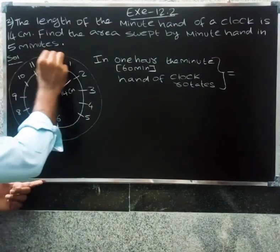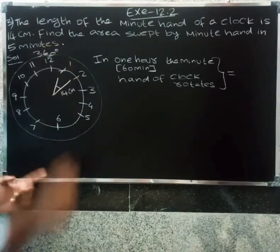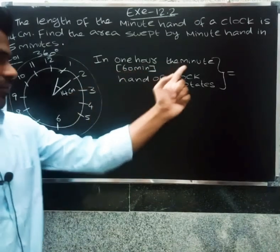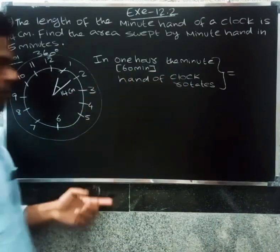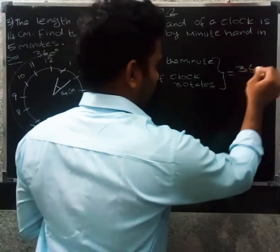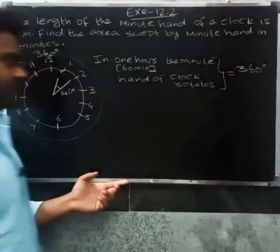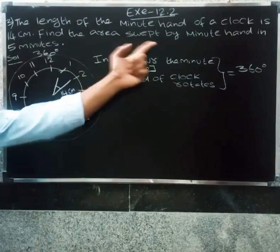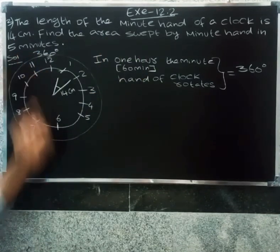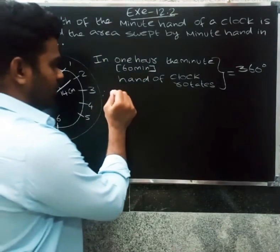In one hour we get 360 degrees. So in one hour, the minute hand of a clock rotates 360 degrees in a total circle. Now let's find the area swept by the minute hand in 5 minutes.